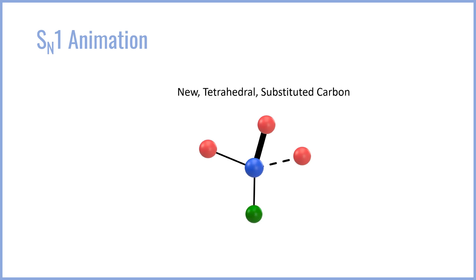This pushes all of the groups towards the top, giving us a new tetrahedral substituted carbon with the opposite stereochemistry of what we initially started with. However, it could have just as easily attacked from the top face, giving us the same stereochemistry, overall leading to a racemic mixture.